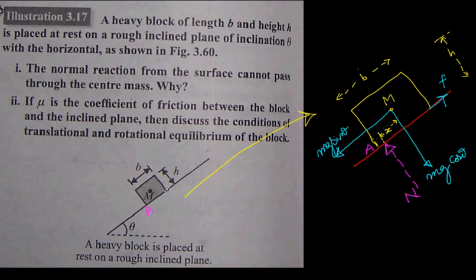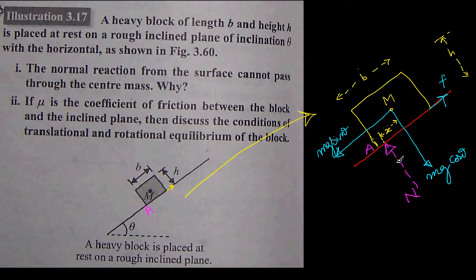We have a friction force acting in the upward direction along the incline. Why in this direction? Because this block will try to move down, so friction acts upward. Another force is the normal force. In regular problems, when we assume the block as a small block, we always take N passing through the center of mass of the body.